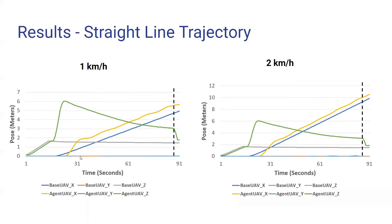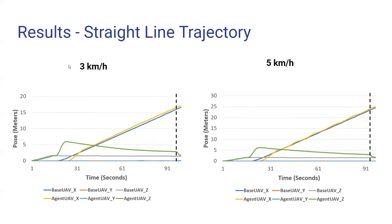The x-axis represents the time in seconds, and the y-axis represents the pose of the base UAV and agent UAV along the x, y, and z axis. The black dashed line represents the place at which the descent starts and followed by the landing. And here the straight line is happening along the x-axis. That's where you could see that base UAV is following the x, and the agent UAV is tracking it. And the similar performance here. And same story for 3 km per hour and 5 km per hour as well with the straight line trajectory.